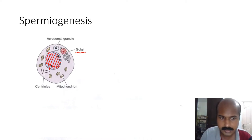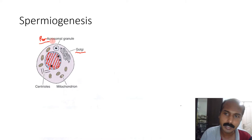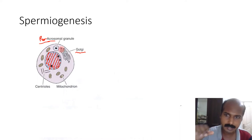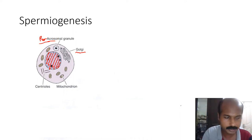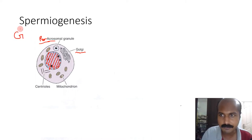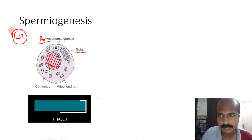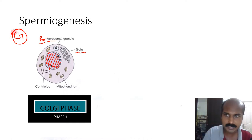The Golgi in the spermatid forms pro-acrosomal granules from the side bulges of the Golgi cisternae. These pro-acrosomal granules coalesce like small bubbles to form an acrosomal granule. This stage is called the Golgi phase — the first of four phases of spermiogenesis.